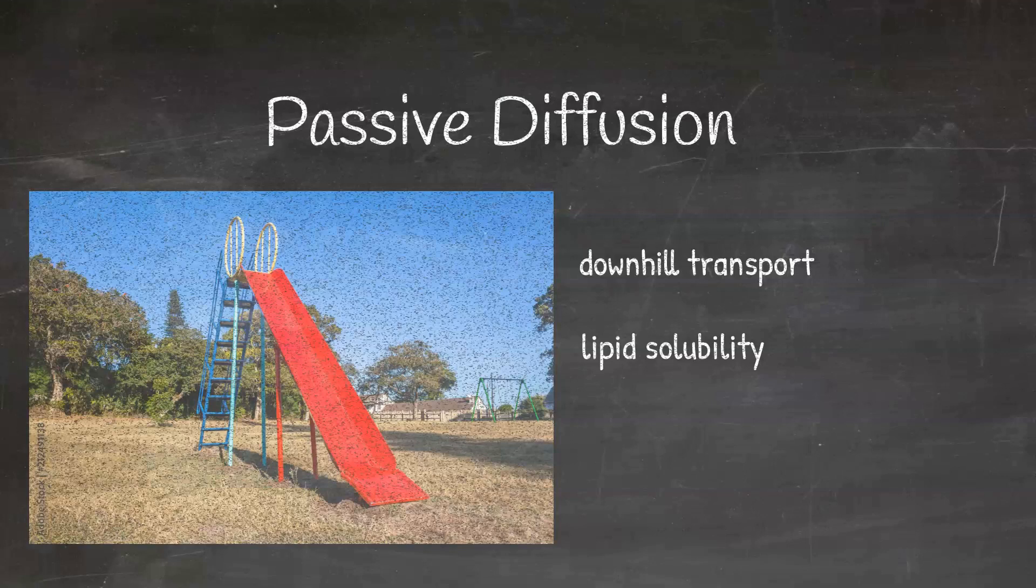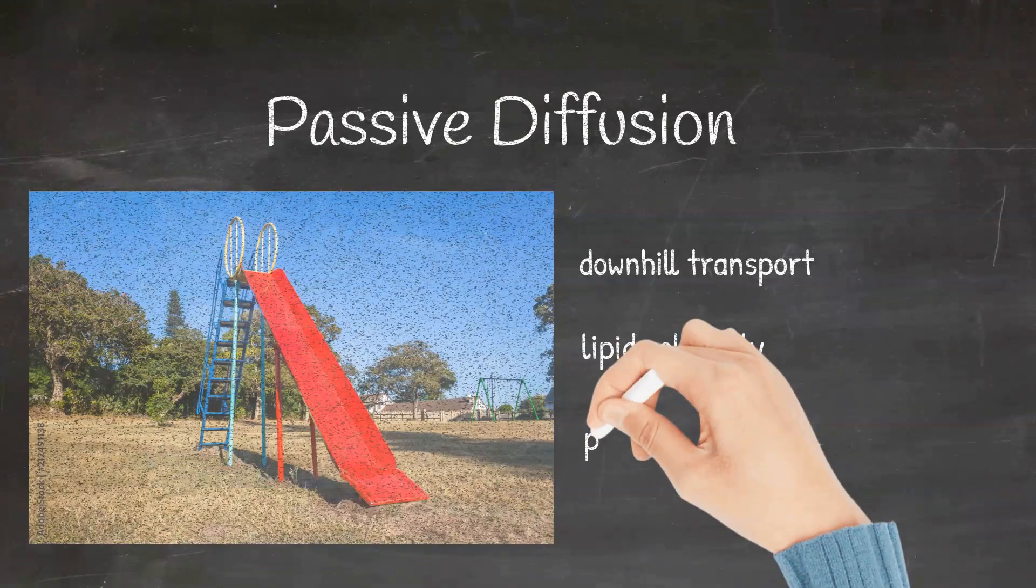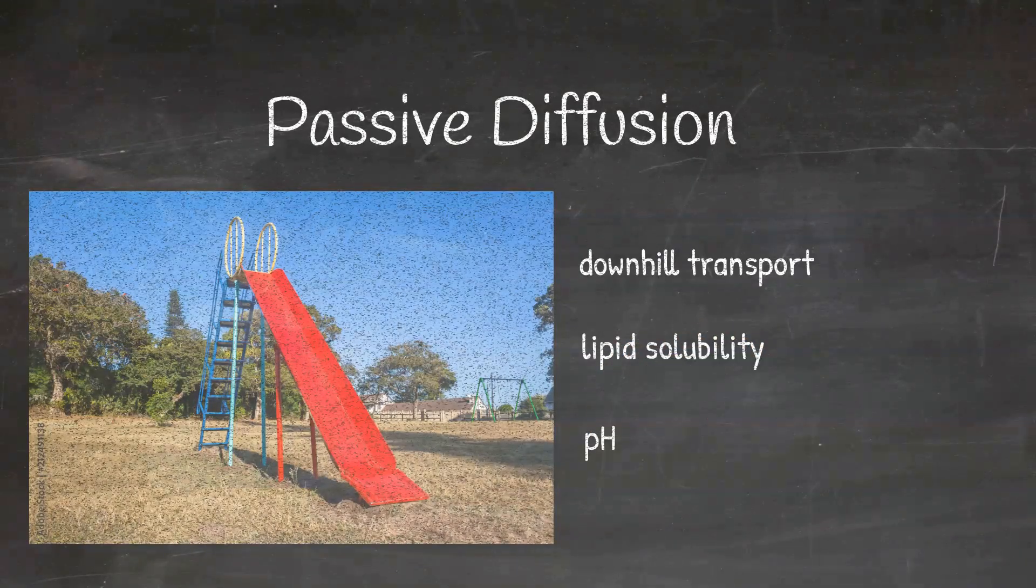Whereas drugs which are weak bases are non-ionic in a basic medium. So, passive diffusion is better in a basic medium for drugs which are weak bases.